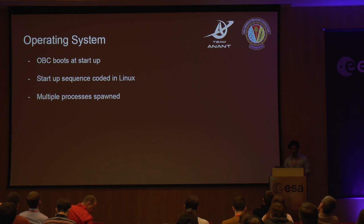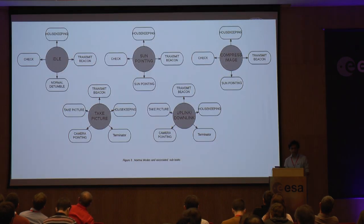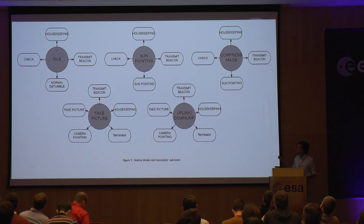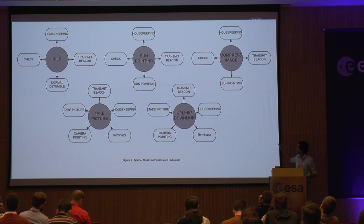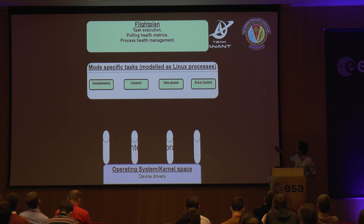Here's the startup process: the OBC boots at startup when the EPS starts the OBC. The startup sequence is coded in C, and then we spawn multiple processes corresponding to different modes. The satellite will majorly be in idle mode, but depending on conditions it can switch — for example, to sun-pointing mode when you need more power, or to image-compression mode, which takes the most power. There are also uplink and imaging modes. The software abstraction layer has the flight plan at the top, which spawns processes as required; below that are the device drivers, and further down is the hardware.